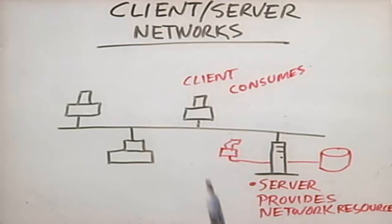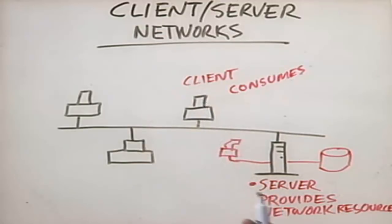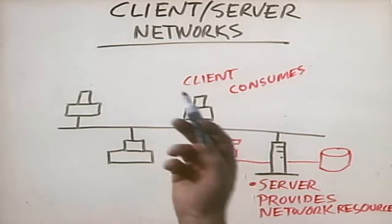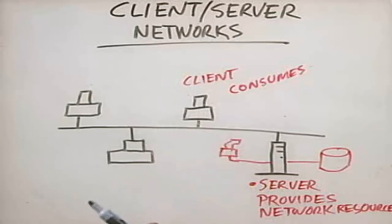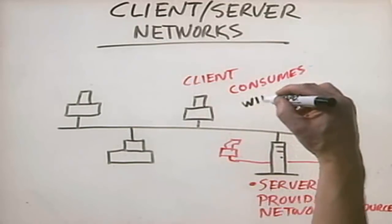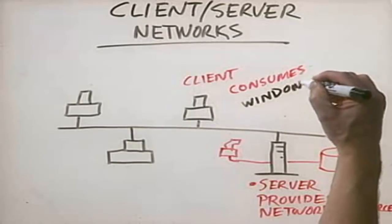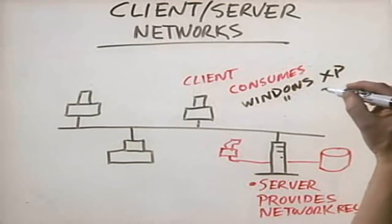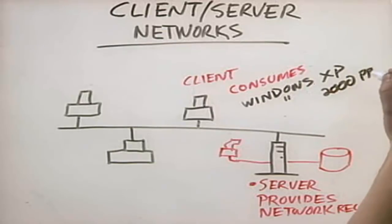The server provides the resources; the client simply uses the resources. To do that, different operating systems are implemented. Recall that with a peer-to-peer network, everybody had the same operating system — not so in a client-server network. Client workstations have generic operating systems that provide functionality such as running applications for word processing, spreadsheets, etc., and software that allows them to connect to the server. Examples would be Windows XP or Windows 2000 Professional.